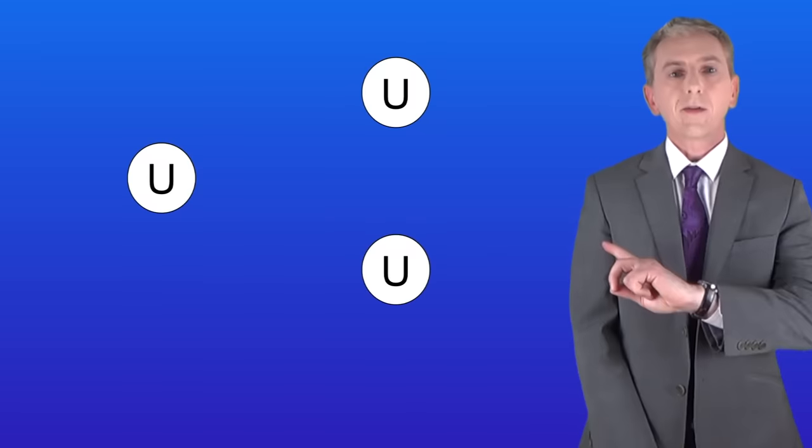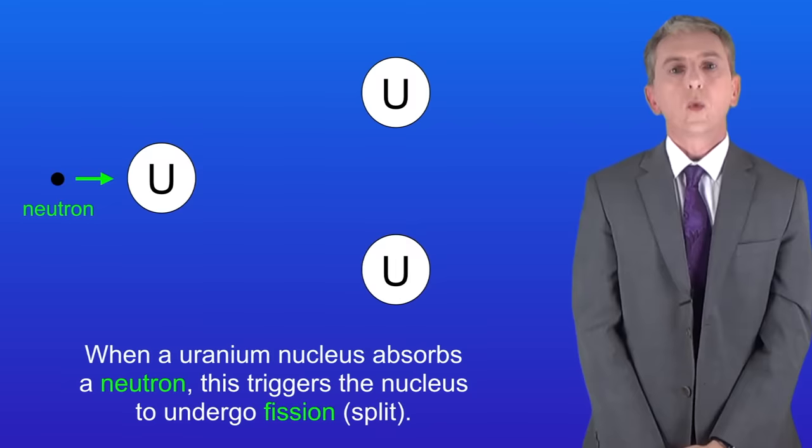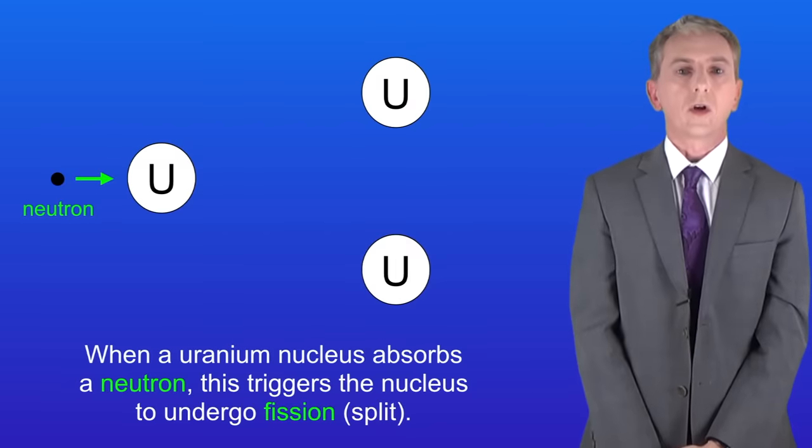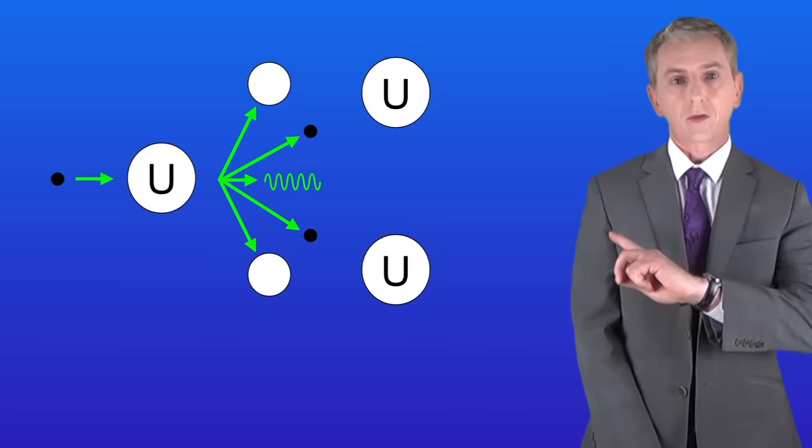So here I'm showing you a number of uranium nuclei. When a uranium nucleus absorbs a neutron this triggers the nucleus to undergo fission, in other words split like this.